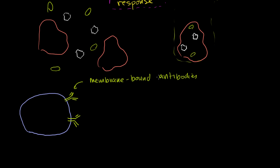Antibodies are proteins. You've probably heard the word — do you have antibodies for such-and-such flu or virus? Antibodies are often referred to as immunoglobulins. These are essentially equivalent words: antibodies are immunoglobulins, and they're really just proteins.